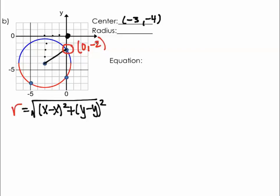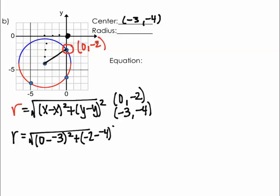Now we're going to find that radius. So my radius is going to equal the square root of, if we have our two ordered pairs, 0, negative 2, and our center of negative 3, negative 4, we can go ahead and start plugging these in. So x minus x is going to be 0 minus negative 3 squared plus negative 2 minus negative 4 squared.